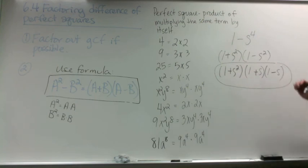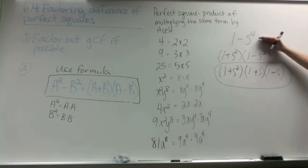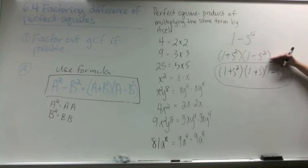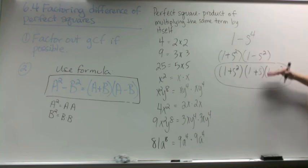So whenever you're factoring a difference of perfect squares, you may end up with another difference of perfect squares that you have to continue to factor.